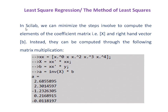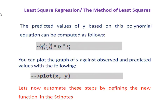In Scilab we can minimize these steps to compute the elements of matrix X and right-hand vector B. The xx matrix is a row vector with elements x^0, x^1, x^2, x^3, and x^4. Matrix capital X is defined as xx_transpose * xx, and matrix B equals xx_transpose * y. By solving this we can get the values of the coefficients a and the best fitted values of y.